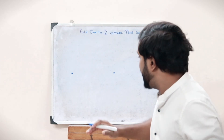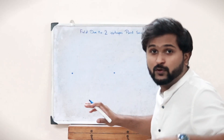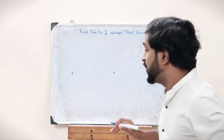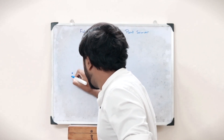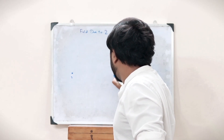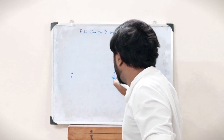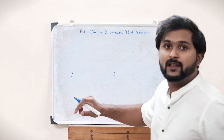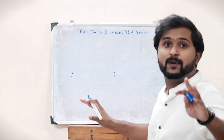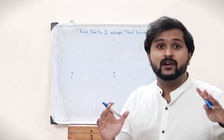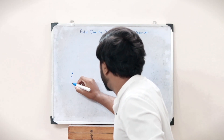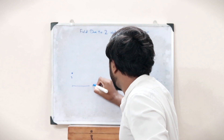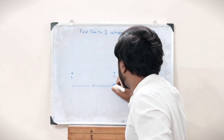Now let us consider two such isotropic point sources — let this be isotropic source number 1 and let this be isotropic source number 2. Let these two sources be separated by a particular distance d.